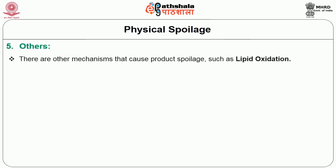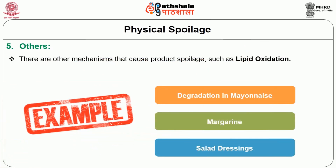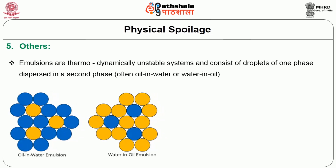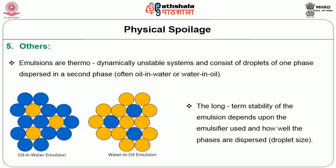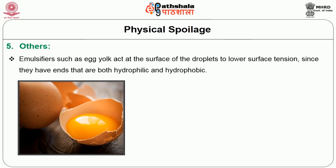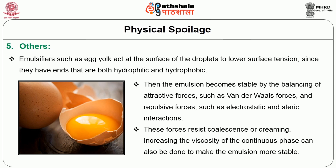Other causative agents can cause product spoilage such as lipid oxidation — for example, degradation in mayonnaise, margarine, and salad dressings. Emulsions are thermodynamically unstable systems consisting of droplets of one phase dispersed in a second phase. The long-term stability of the emulsion depends upon the emulsifier used and how well the phases are dispersed. Emulsifiers act at the surface of the droplet to lower surface tension, since they have ends that are both hydrophilic and hydrophobic. The emulsion becomes stable by the balancing of attractive forces such as van der Waals forces and repulsive forces such as electrostatic and steric interactions, which resist coalescence or creaming. Increasing the viscosity of the continuous phase can also be done to make the emulsion more stable.